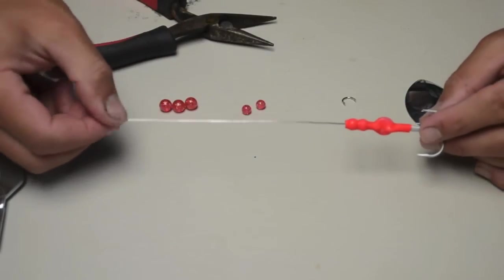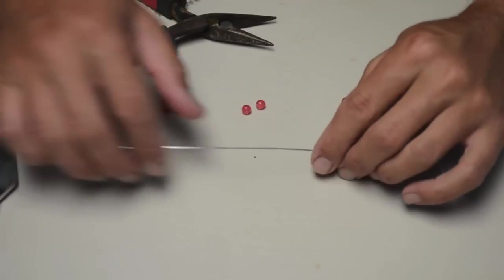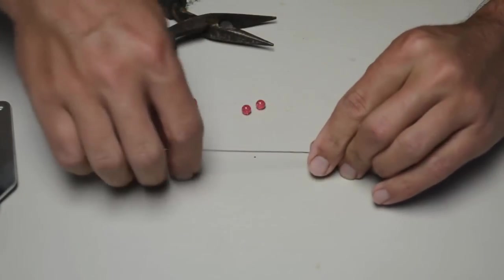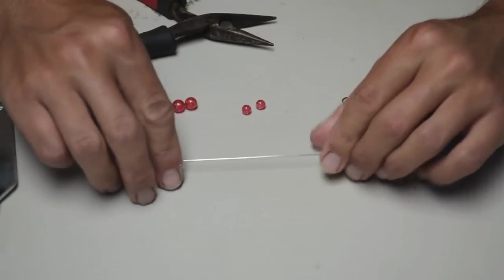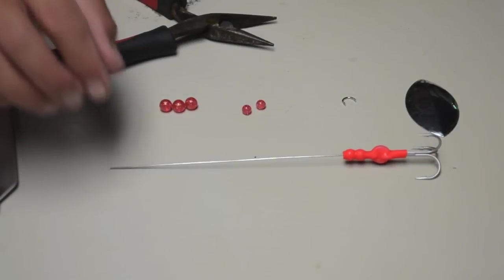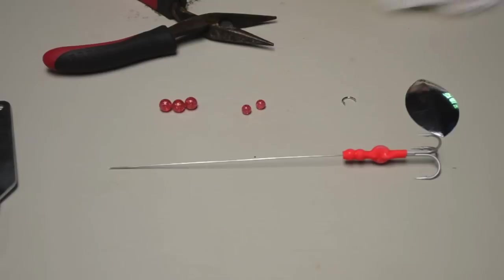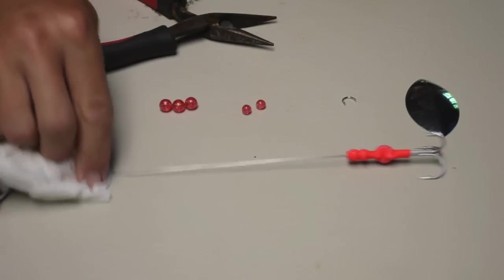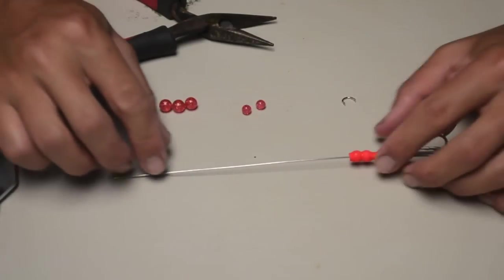So there we go. We got the hook and split ring and two beads underneath the surgical tubing. Sometimes in this process I'll bend the wire a little bit. It's okay. It's not that big a deal. You can kind of just work it back into a straight line. It's not a tragedy. This wire is pretty easy to bend in the direction you want to. It'll stay.